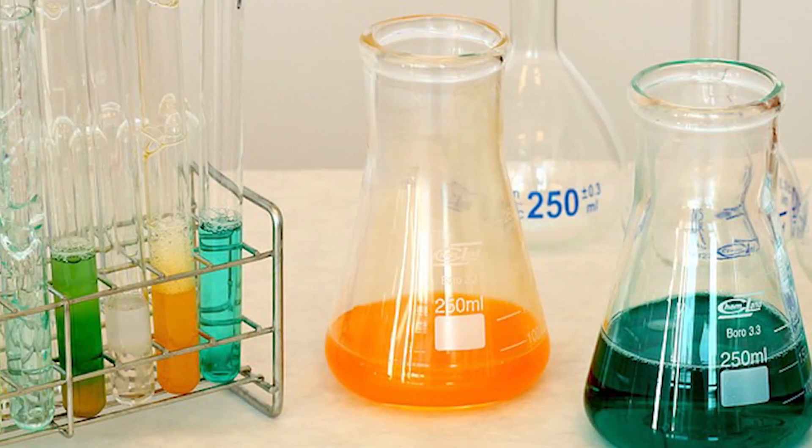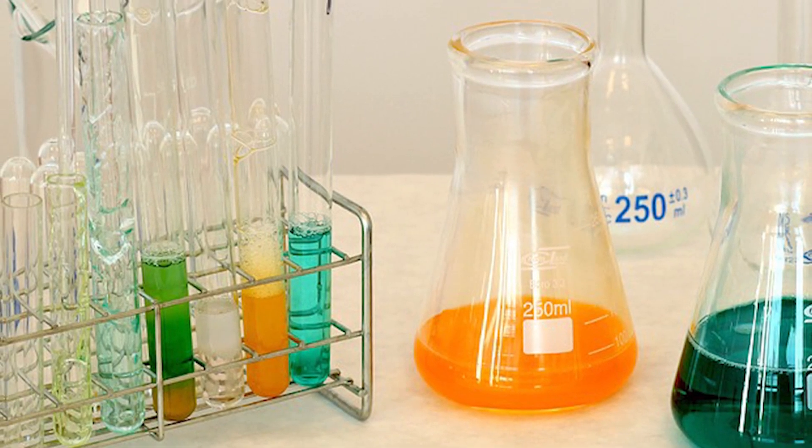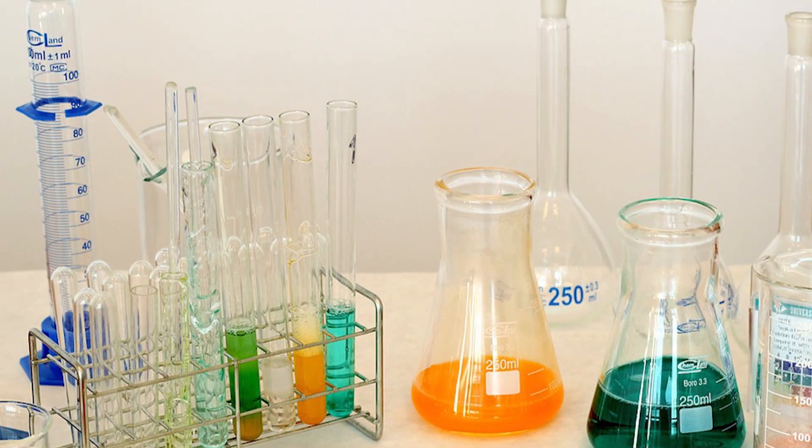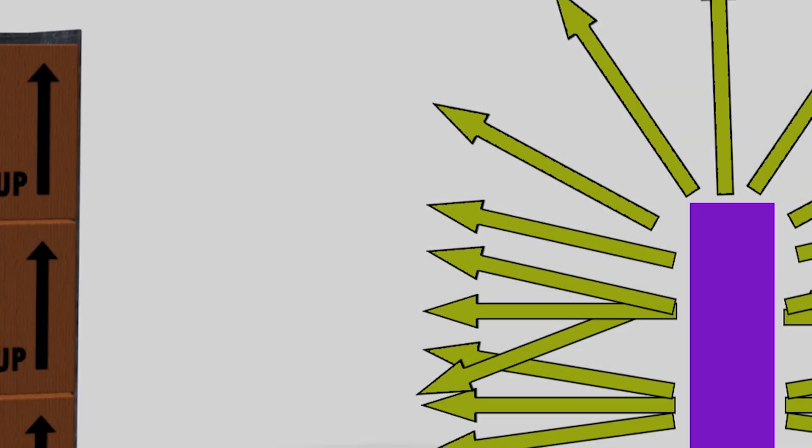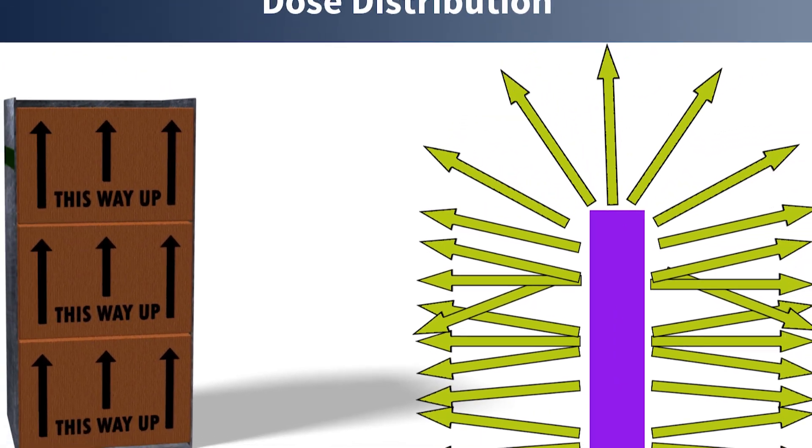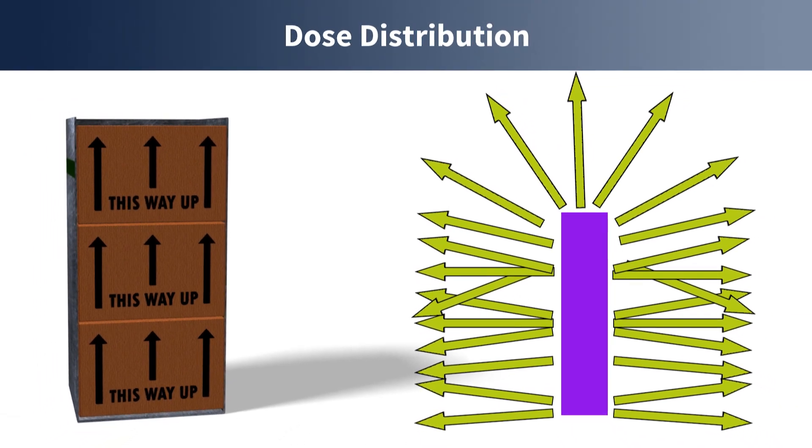In the case of gamma, the desired sterilization dose for the product is first established after which dose mapping confirms the dose distribution in the product.